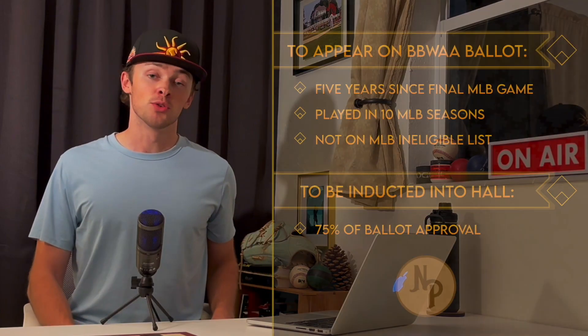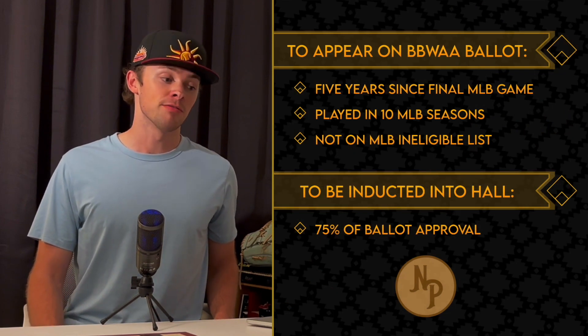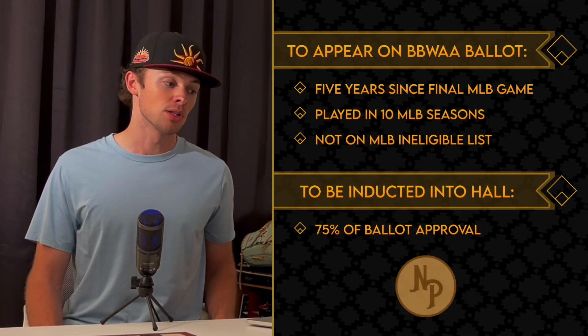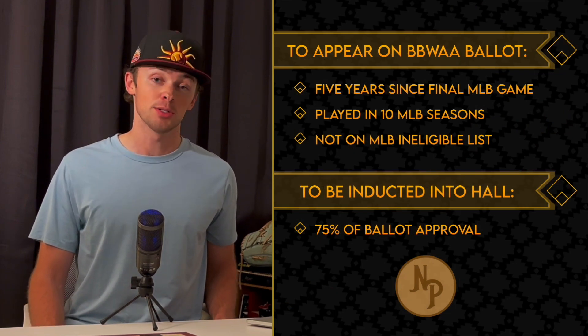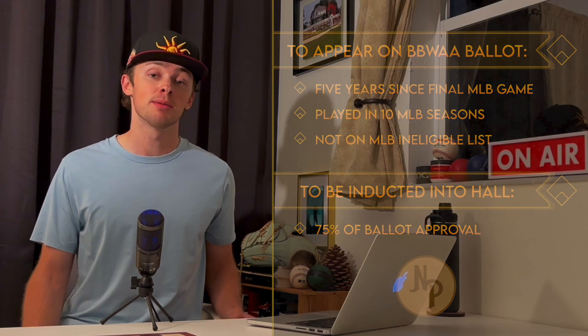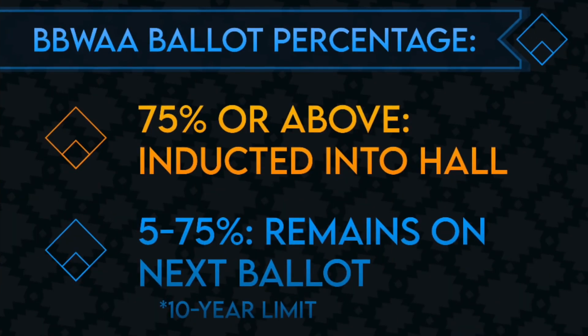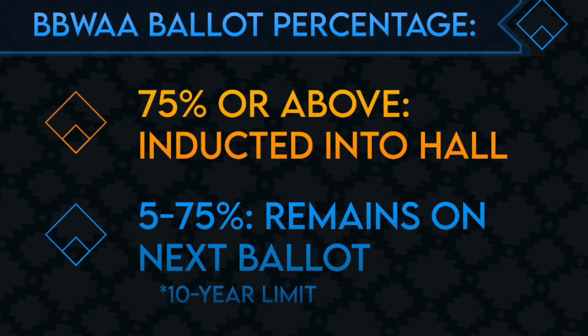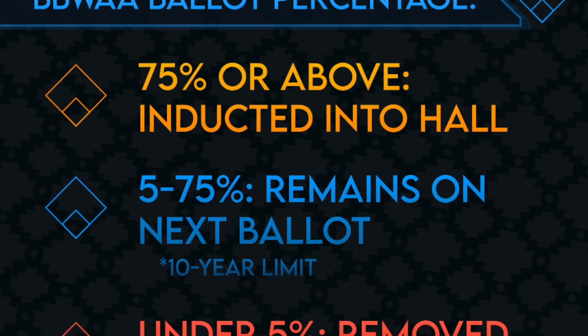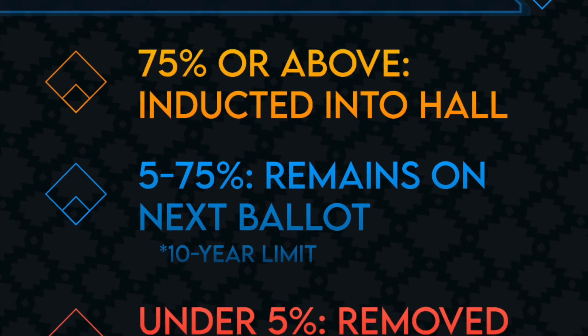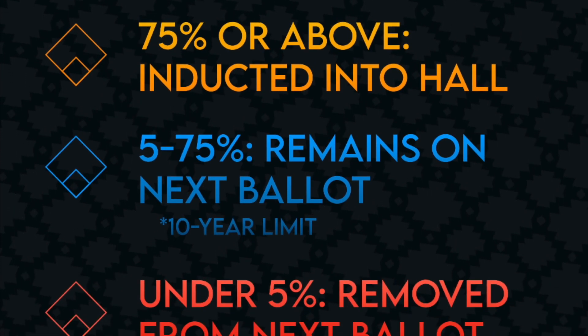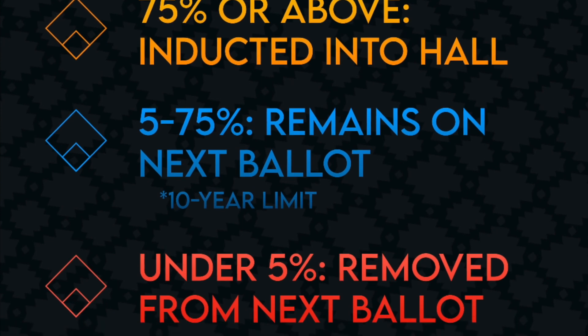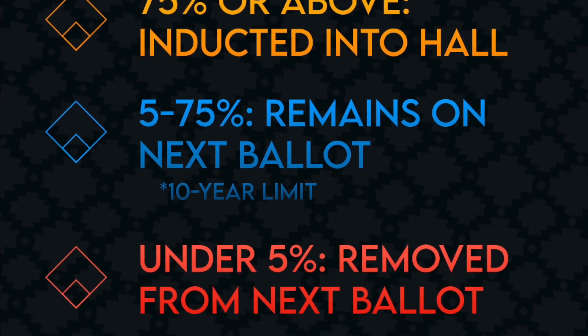For a player's name to grace the BBWAA ballot, their final MLB game must conclude five years prior, and they must play a pretty good amount of big league baseball. There are almost 400 ballots cast each year for the Hall of Fame. Once all the ballots are counted, a player with at least 75% of the vote is elected into the Hall. A player is removed if they poll below 5% or if they fail to be inducted after 10 years, whichever one comes first.